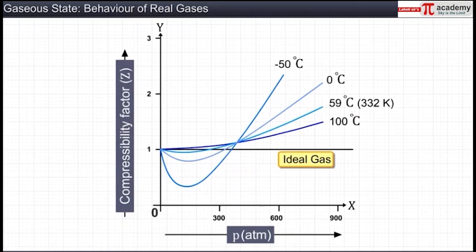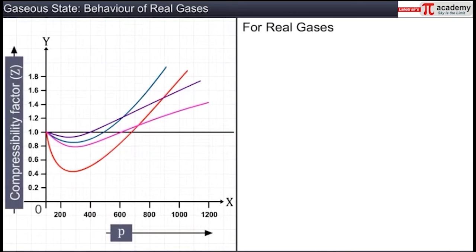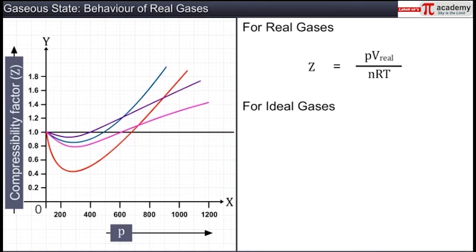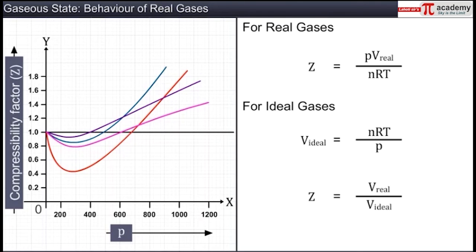Let us see another significance of the compressibility factor. We know that the compressibility factor for a gas is calculated as Z = PV_real / nRT. If the gas is an ideal gas, then V = nRT / P. On substituting this value in the equation for compressibility factor, we get Z = V_real / V_ideal. From this we can conclude that Z gives the ratio of the actual molar volume of a gas to the molar volume it would have if it were an ideal gas at that temperature and pressure.